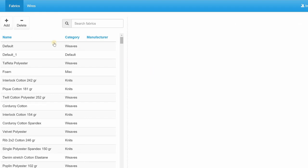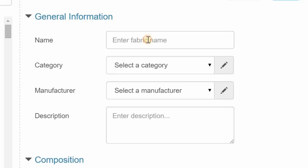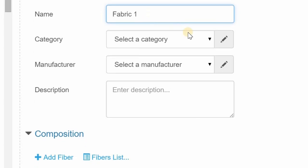In the upper right drop-down menu, choose the correct company database for the fabric you wish to test. On the left, click the plus sign to add a new fabric. Fill in the required fields under the General Information section. Name and category are mandatory, but manufacturer and description are optional.